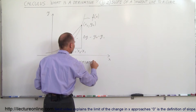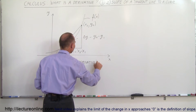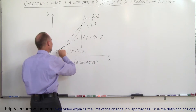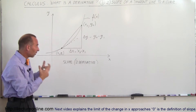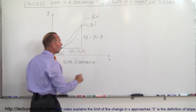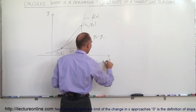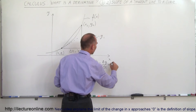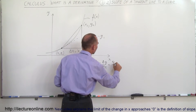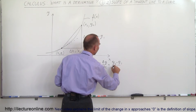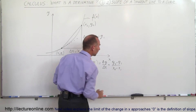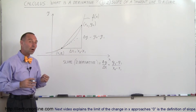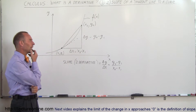Why do I say approximately? Because the slope of that line is not exactly the slope of the tangent line at that point. It's approximately the derivative, which is simply equal to the change in y divided by the change in x — that would be y2 minus y1 over x2 minus x1. You can see it's not exactly the derivative, it's approximately the derivative.